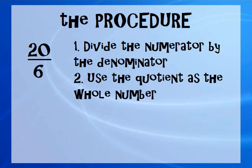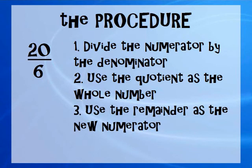Then we're going to use the quotient as the whole number. Remember, the quotient is the answer of our division problem. Then we're going to use the remainder as our new numerator. And if we need to, we're going to simplify at the end after we have our new mixed number.